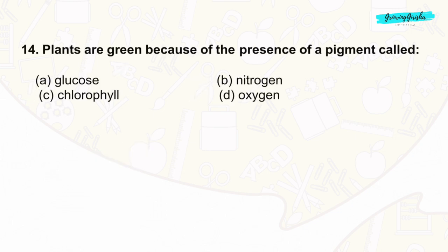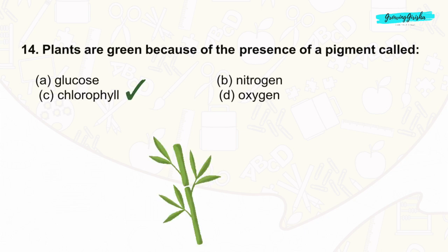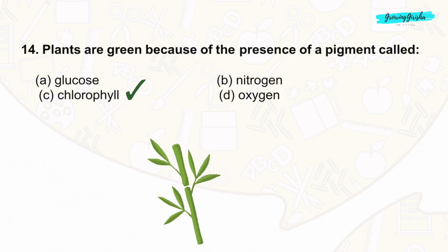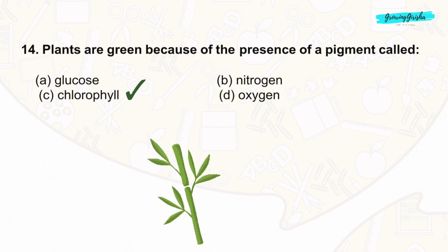Question 14: Plants are green because of the presence of a pigment called chlorophyll. Chlorophyll is a green pigment found in the cells of plants, and it plays a crucial role in photosynthesis — the process by which plants convert sunlight into energy. The correct answer is option C: chlorophyll.